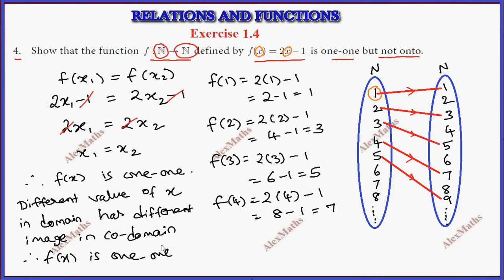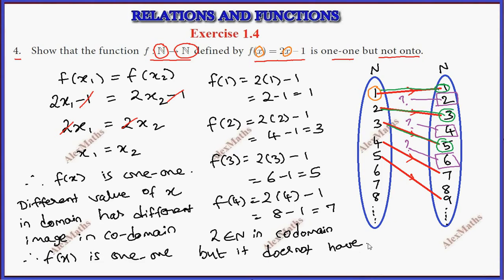For onto, 1 is a preimage, 3 is a preimage, 5 is a preimage. But not all elements have a preimage. For example, 4 has no preimage. Even numbers have no preimage. So that is the general idea. Let's take a specific example: 2 belongs to natural numbers in the codomain, but it does not have a preimage in the domain.